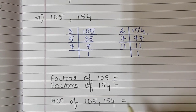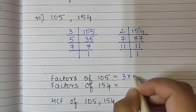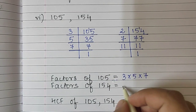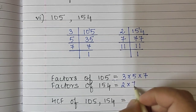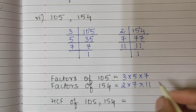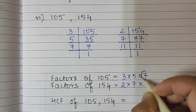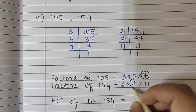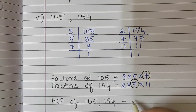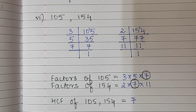So the factors of 105 are 3 into 5 into 7, and the factors of 154 are 2 into 7 into 11. We will circle the common factors — that is 7 and 7. So the HCF of these two numbers is the number 7.